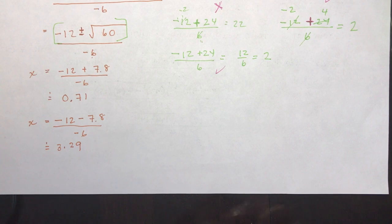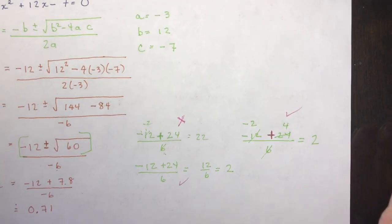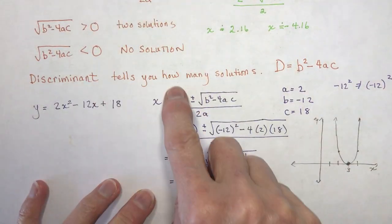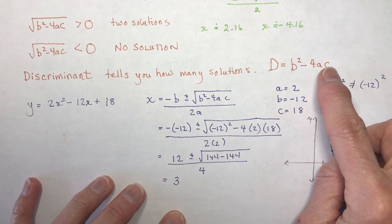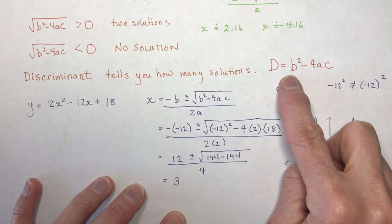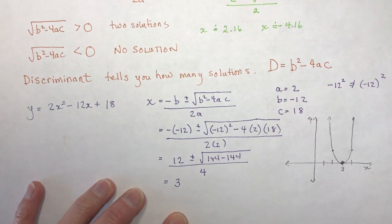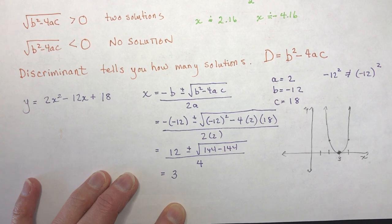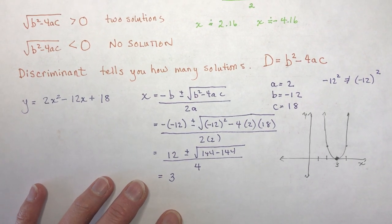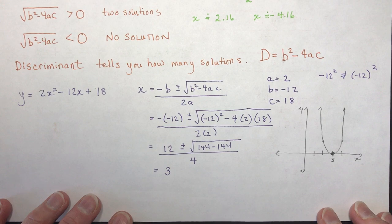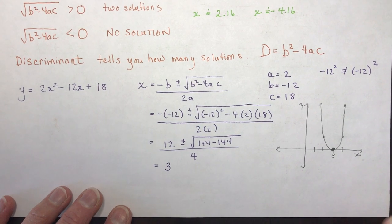So that's some work with the quadratic formula and the discriminant. The key thing to understand is that if the discriminant equals zero, you have one solution; if the discriminant is greater than zero, you have two solutions; and if it's less than zero, you have no solutions. Do some homework — I'm sure your teacher has assigned something for this lesson, and we'll see you in the next video.